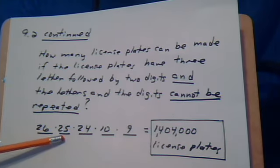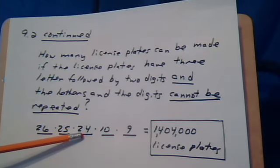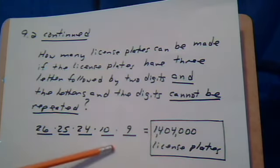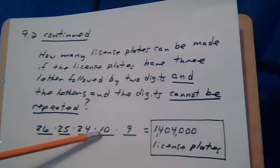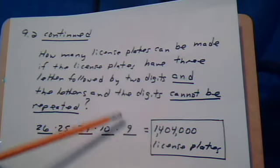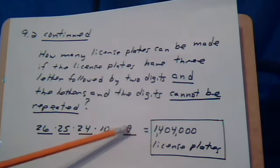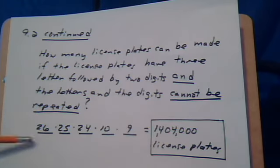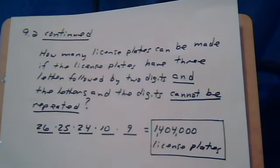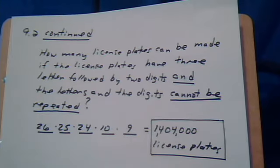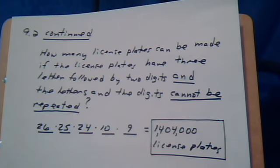So now we only have twenty-five letters available. And once you make this assignment, there's only twenty-four letters available. For the first digit, at the beginning, we have all ten available. But then we assign that one, and for the next position of the digit, we only have nine digits available. Multiply, and this is how many license plates you could come up with if no repetition is required.